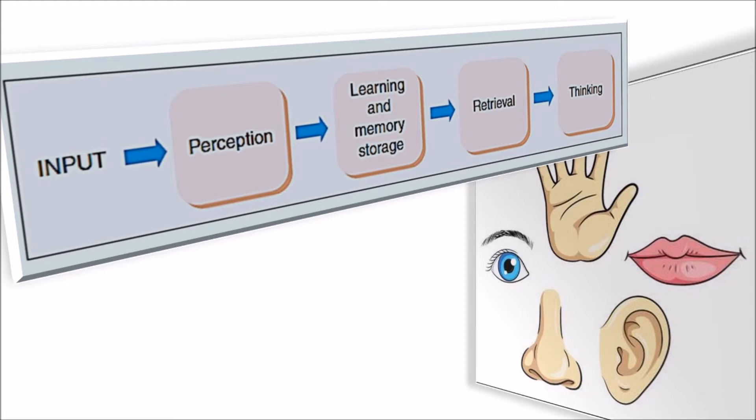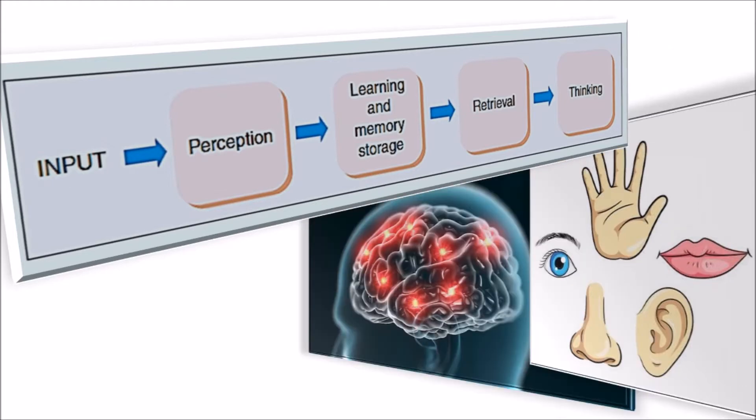The process of perception will often lead to the making of some kind of record of the input received, and this involves learning and memory storage. Once a memory has been created for some item of information, it can be retained for later use to assist the individual in some other setting.